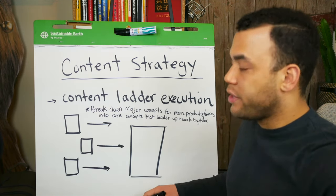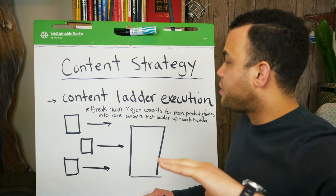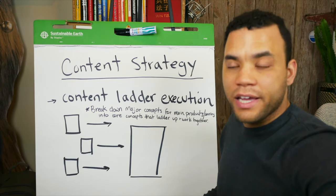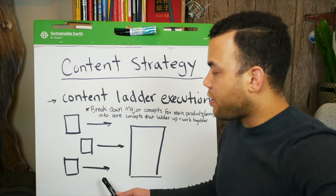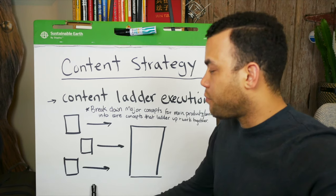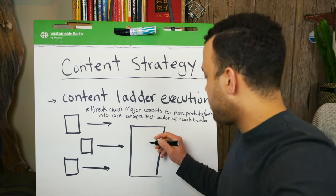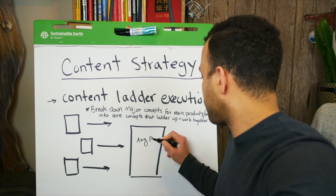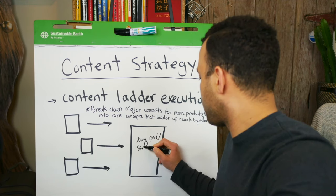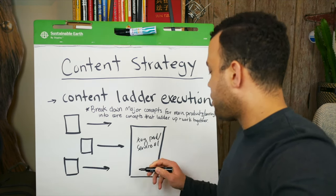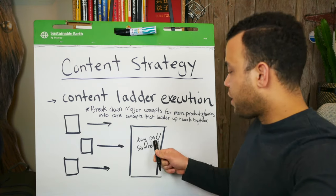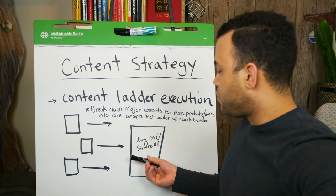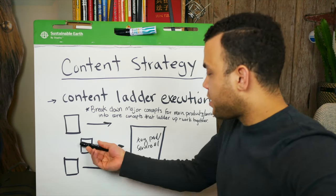The second thing you need to be focusing on in the content ladder execution is, like we talked about, this ladder. Now that you've got your ideation, you need to create this ladder. Once you've created it, you can have multiple key products, key services, whatever idea you want to be talking about. You can have multiple things you want to be pushing, and then break each of these down.